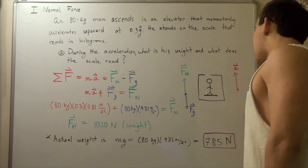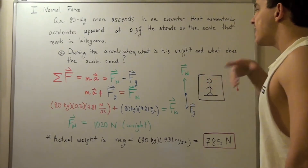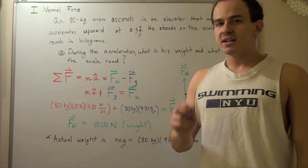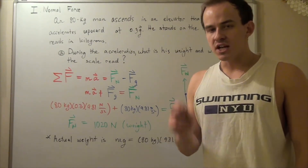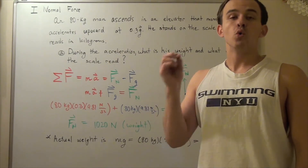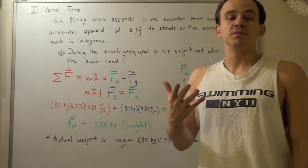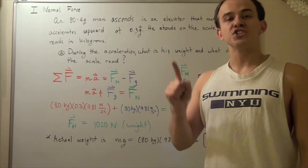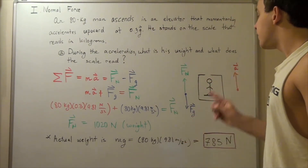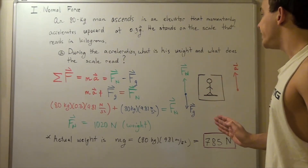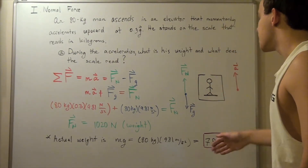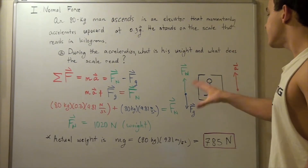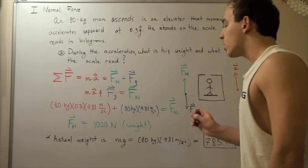Because our man is accelerating upward, according to the first law of motion a net force must be acting on him. If the net force were zero, the man would not be accelerating. But because there is upward acceleration, there must be a net force pointing upward. So let's find all the individual forces acting along the y-axis, since our motion is up or down — in this case, upward.